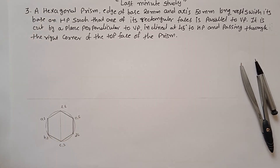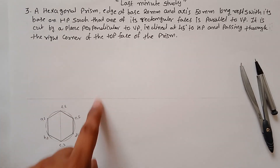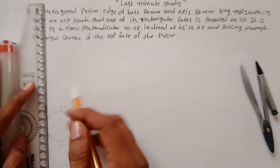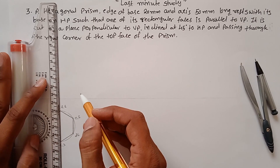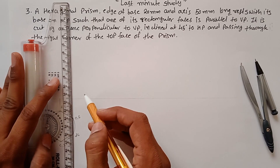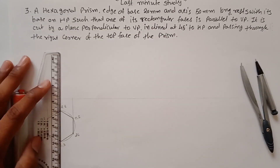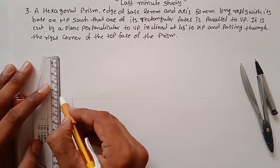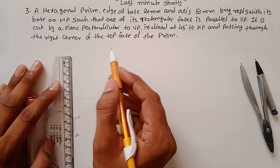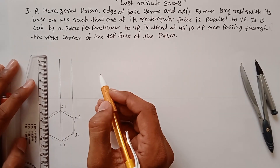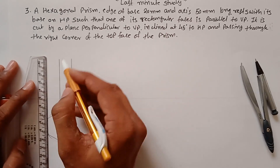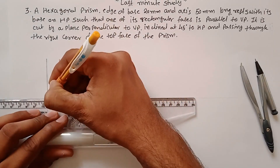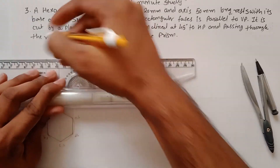This is the top view of your hexagonal prism. The front view of the hexagonal prism will be a rectangle of height 50mm. Draw the projections from your top view and construct the front view. The height will be 50mm. Complete your front view.